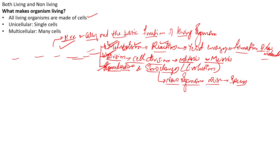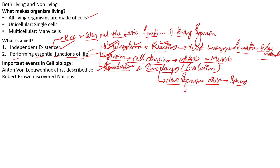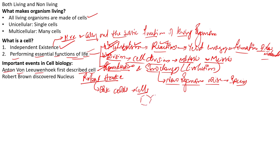Now let us look at some important events in cell biology. First, we credit Anton van Leeuwenhoek — he was the person who actually described the living cell for the first time. However, we also have Robert Hooke, a scientist who observed cork cells and coined the term 'cell' for the empty hexagonal chambers he observed.